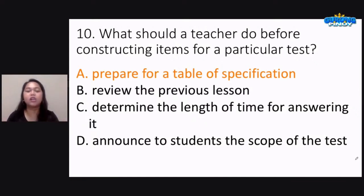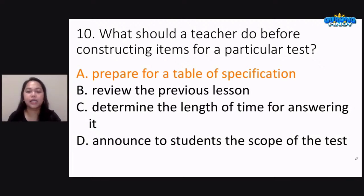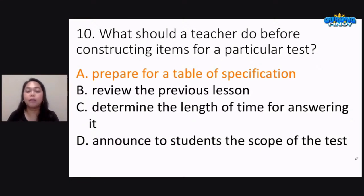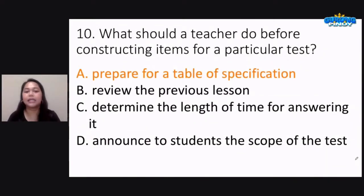For example, if you discussed Newton's laws of motion for five days, and then you have another topic — introduction to kinematics — discussed for only one day, then you should have more items for Newton's laws of motion and fewer items for kinematics in your test. That is your table of specifications.